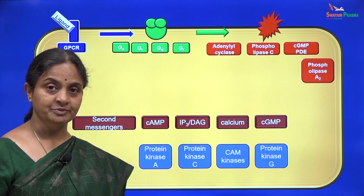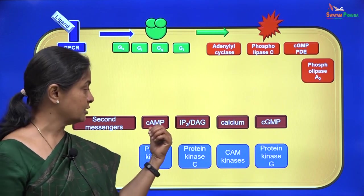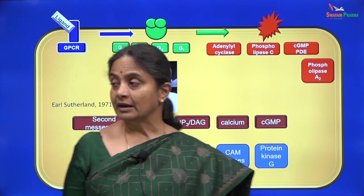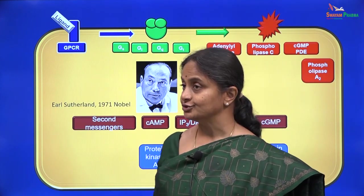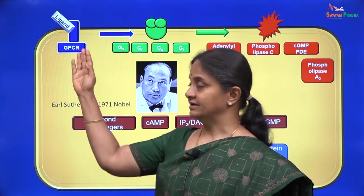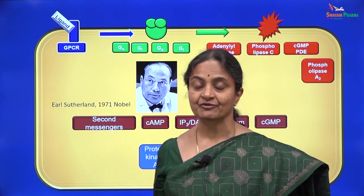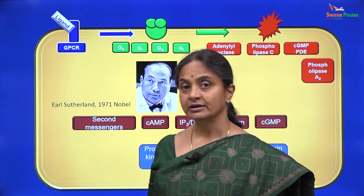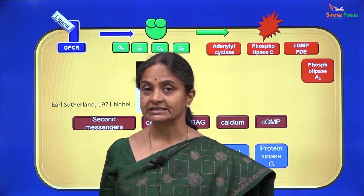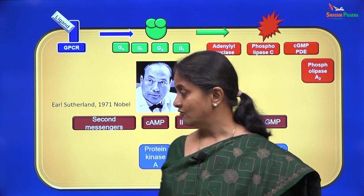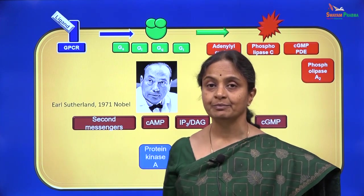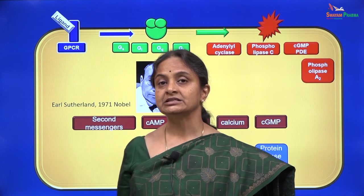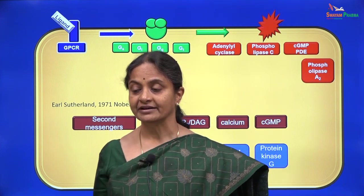The first second messenger to be discovered was cyclic AMP, with particular reference to adrenaline and its mechanism of action. Professor Earl Sutherland won a Nobel Prize in 1971 for his discovery of the cyclic AMP pathway, describing the mechanism of action of adrenaline.